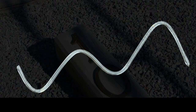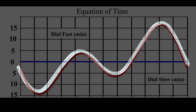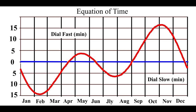The equation of time is designed to predict and allow us to correct discrepancies between clock time and sundial time. This is the equation of time with dates displayed along the horizontal axes and time correction displayed on the vertical axes. When the curve is above the blue center line, the sundial is running fast; when below, it is running slow.